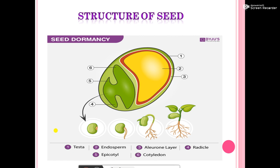The testa means the outer or hard coat of the seed. The endosperm is the part of the seed which acts as a food store for the developing plant embryo, usually containing starch with protein and other nutrients. The aleurone layer is the outermost layer of the endosperm. The radicle is the root-forming part of the seed embryo. The epicotyl is the region above the cotyledon, and the cotyledon is the first leaf that appears during seed germination.